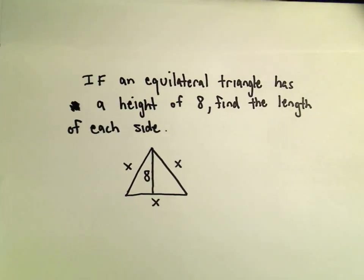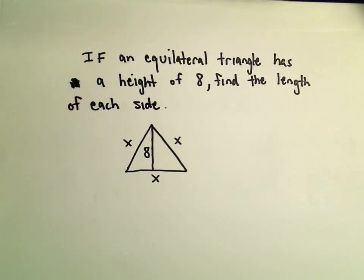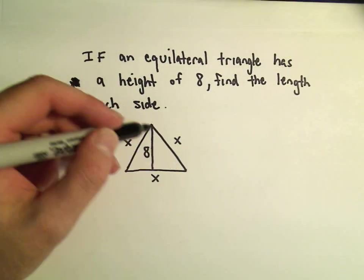Okay, so in this problem, suppose we have an equilateral triangle and it has a height of 8, and suppose we just want to find the length of each side. So again, an equilateral triangle is just one where every side is equal, so I've labeled those generically as x.